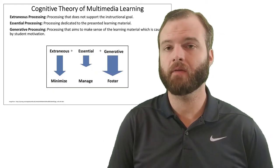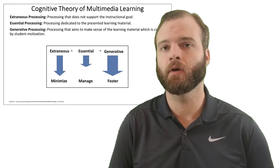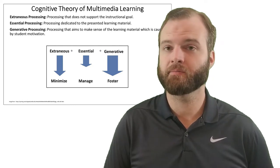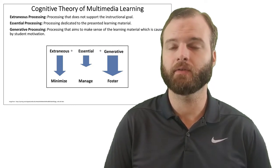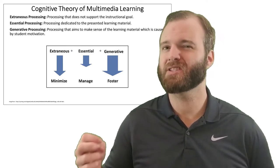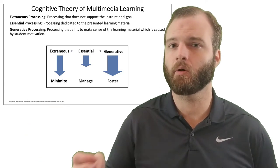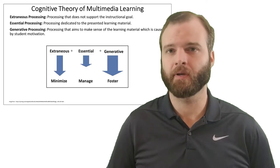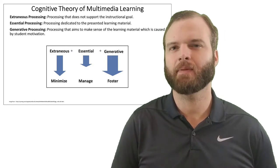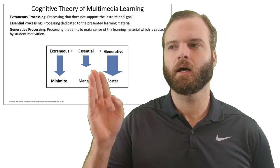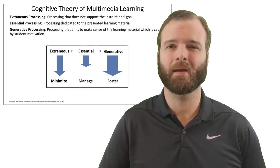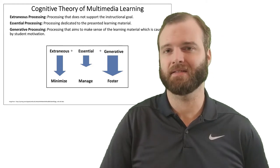In cognitive theory of multimedia learning, we have three processes to discuss in terms of cognitive load and working memory. First would be extraneous processing, which is very similar to extraneous load from the previous theory. Extraneous processing is all the information that doesn't directly pertain to the lesson or our instructional goal — extra pictures, a story that sort of relates to the lesson but not really, any type of extra activity or information that doesn't directly align with our instructional goal. We want to minimize this extraneous processing as much as possible.